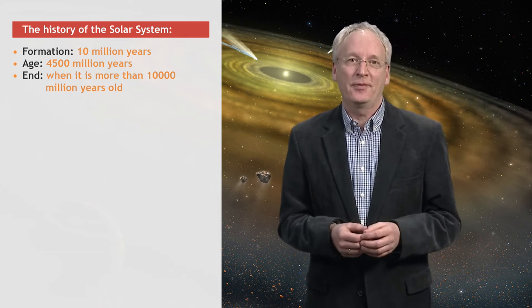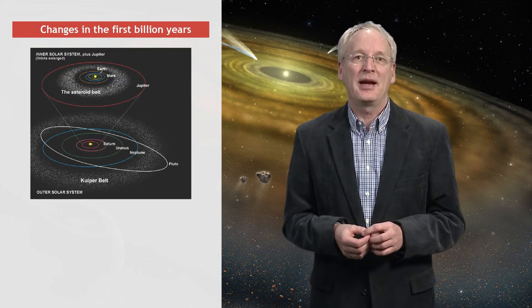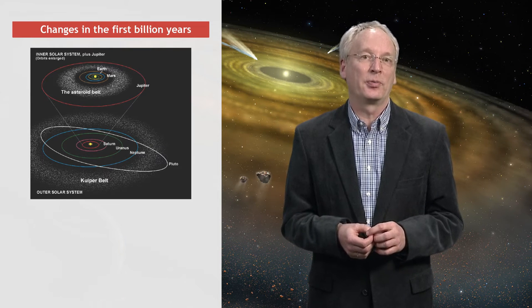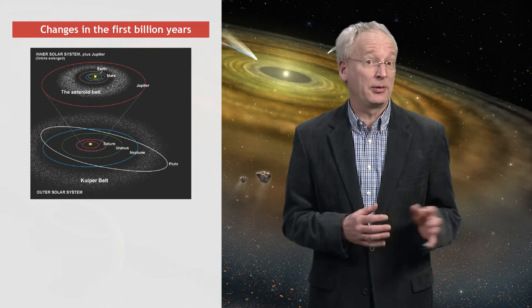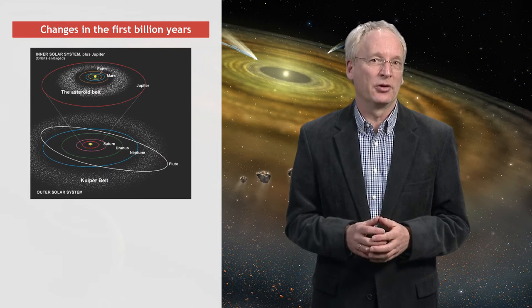In the previous lecture, we made an inventory of everything that makes up the solar system. Besides the main eight planets, we discussed that there are also belts of much smaller objects, in particular the asteroid belt between Mars and Jupiter, and the Kuiper belt outside of the orbit of the outermost planet, Neptune.